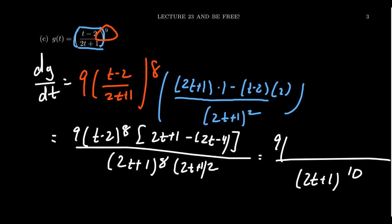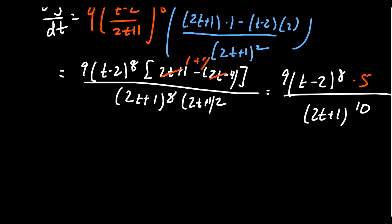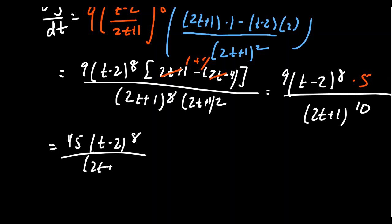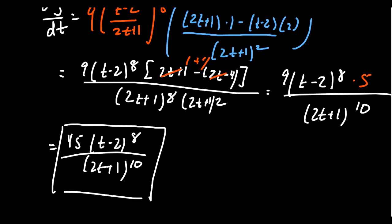In the numerator, 2t cancels with 2t, leaving 1 plus 4, which equals 5. Combining 5 with 9 gives us 45. So the derivative is 45 times (t minus 2) to the 8th power, all over (2t plus 1) to the 10th power. In this example we had to use the chain rule and the quotient rule together.